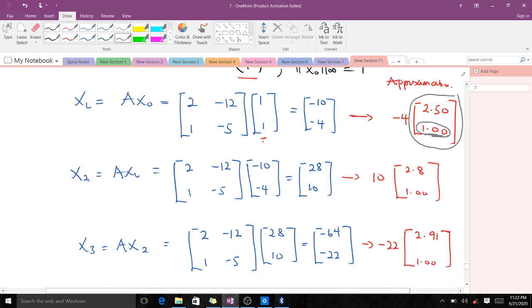The second iteration is x₂ = Ax₁. When we do this, we get (28, 10). We factorize 10 out to make the bottom element 1, giving us 10(2.8, 1.0). This becomes our approximated eigenvector after the second iteration.